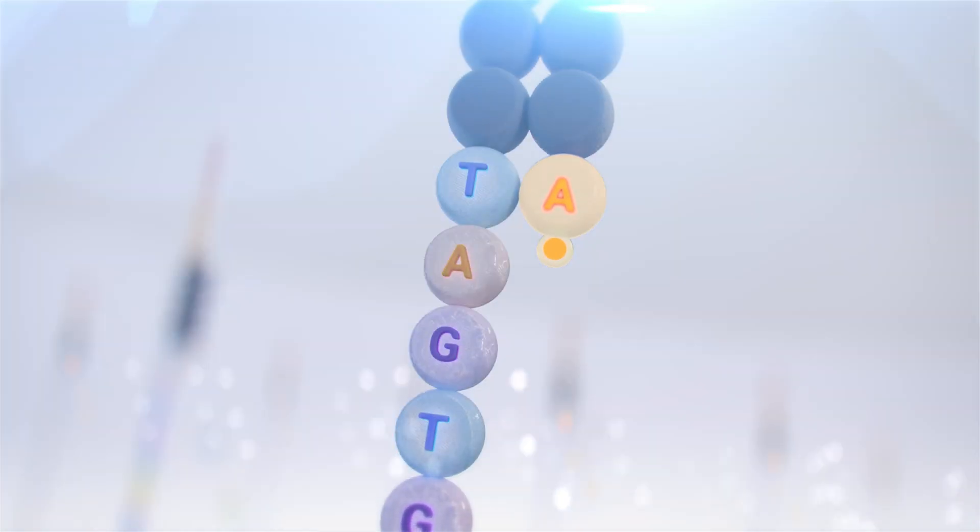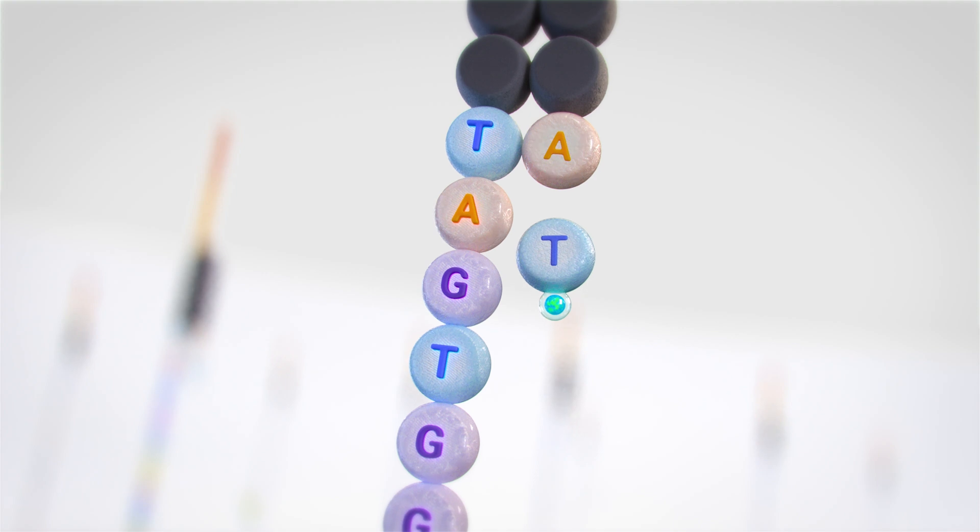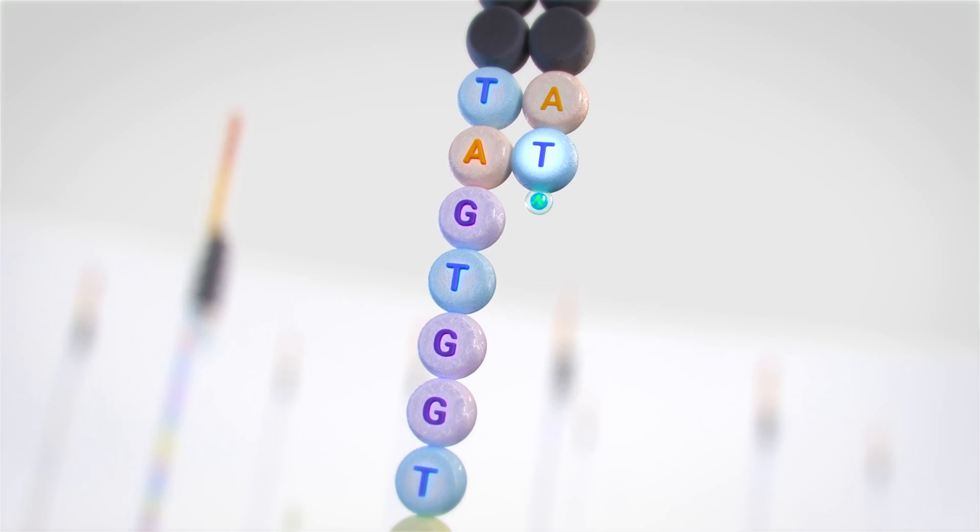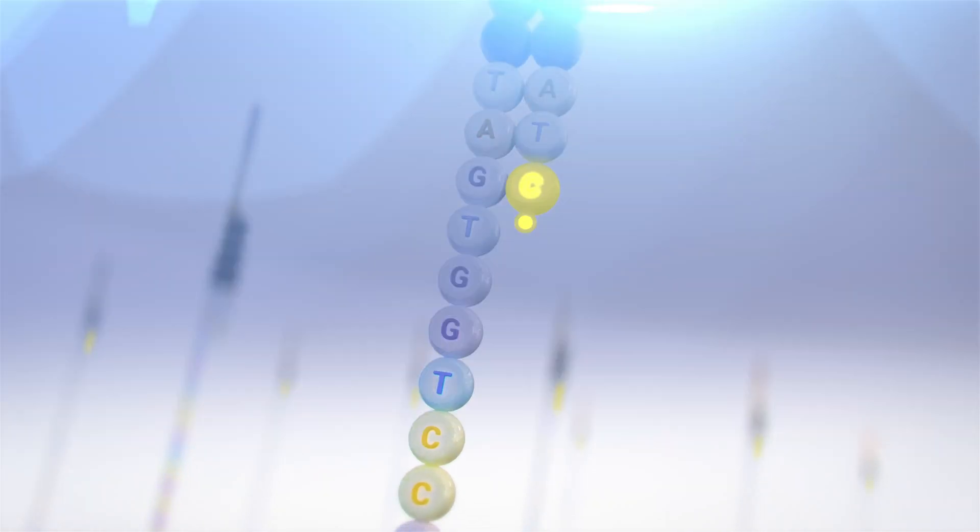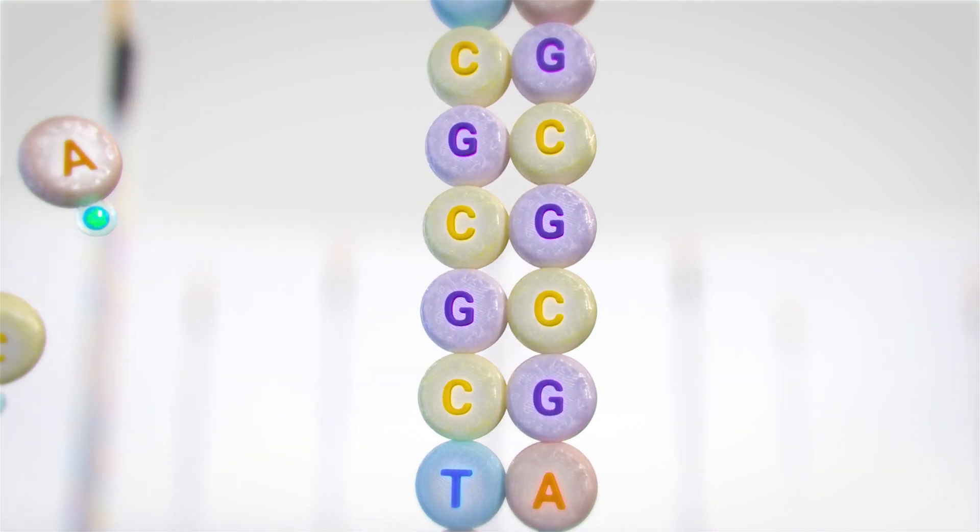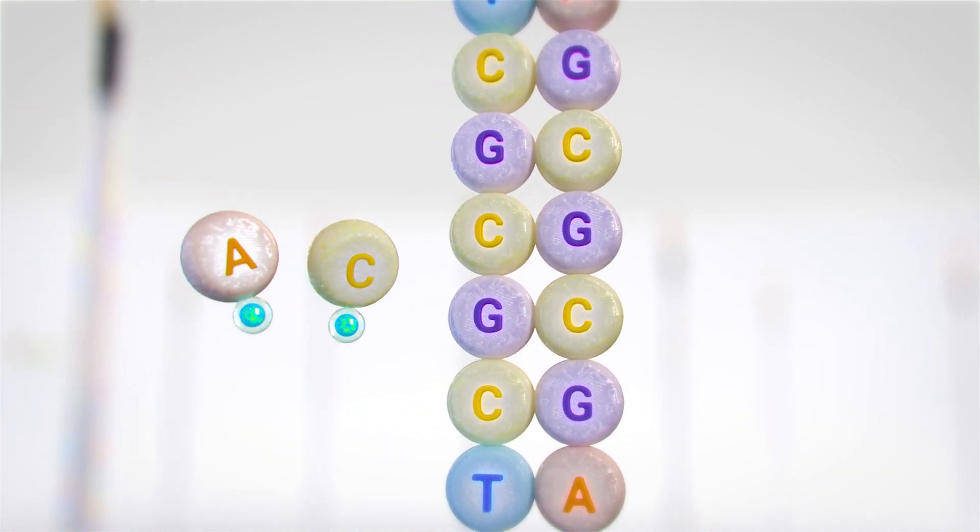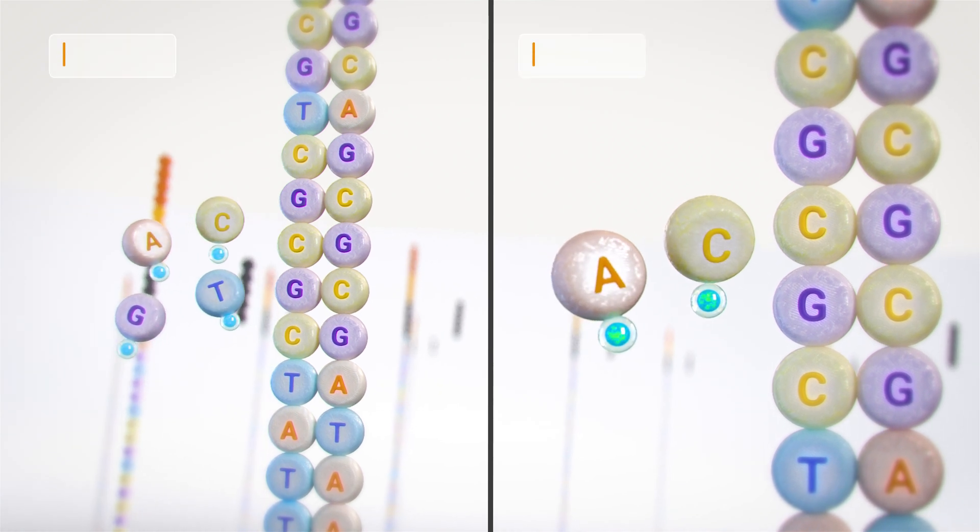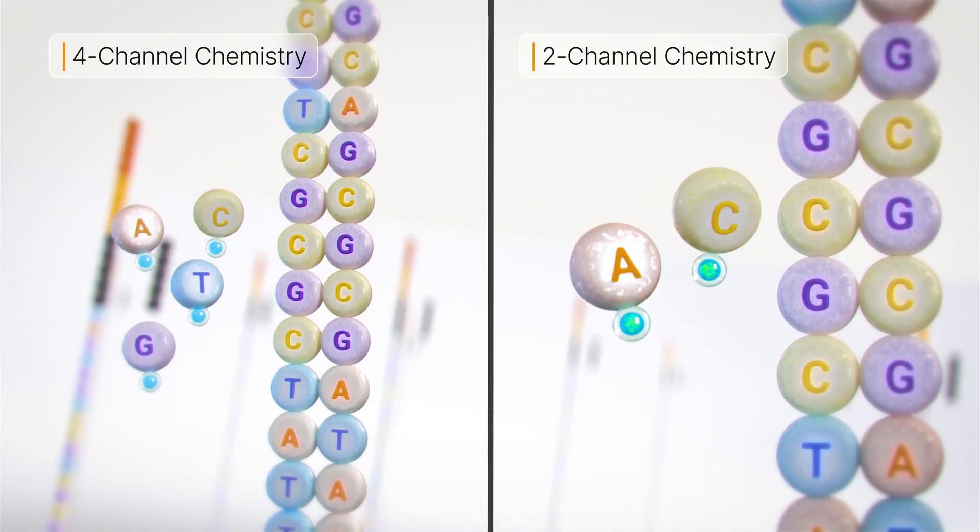This proprietary process is called luminous sequencing by synthesis. The number of cycles determines the length of the read. The emission wavelength along with the signal intensity determines the base call. Illumina sequencing systems have moved from a four channel detection chemistry to a two channel detection chemistry, which improves efficiency and reduces sequencing run times.